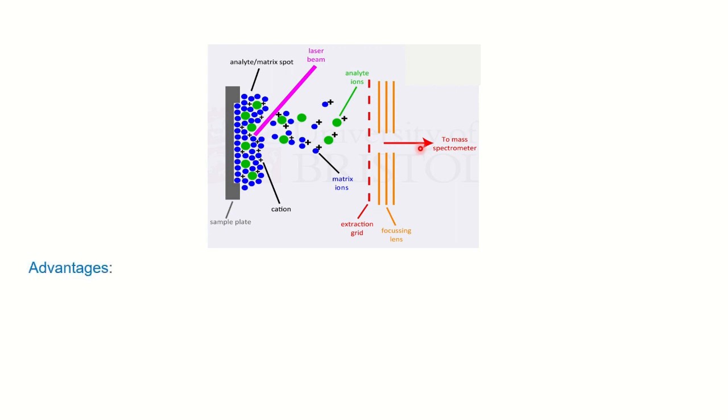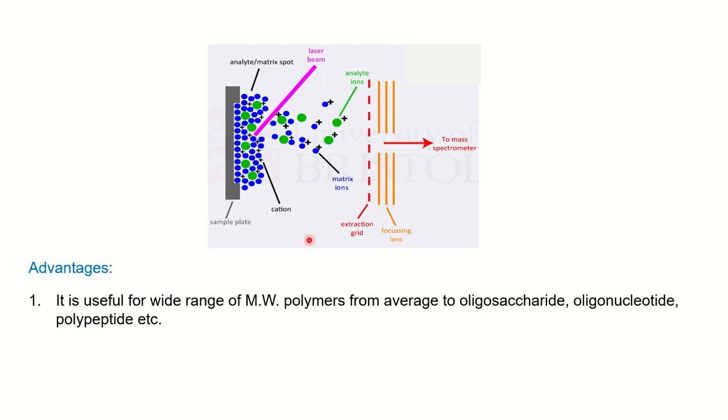What are the advantages? First, it is useful for wide range of molecular weight polymers from average to oligosaccharide, oligonucleotide, polypeptide, etc. It requires few femtoliters, that is only one into 10 to the power minus 15 mole of sample. So if you have very very less amount of sample you can ionize with the help of MALDI.